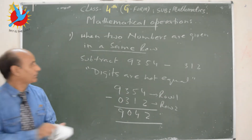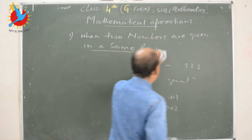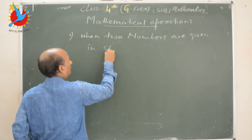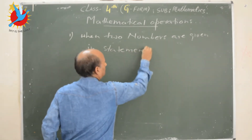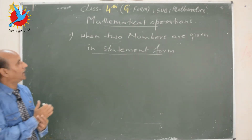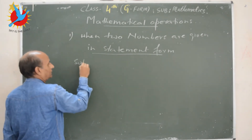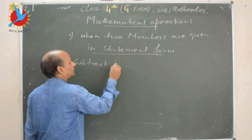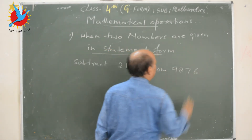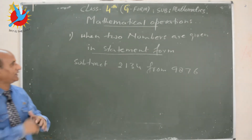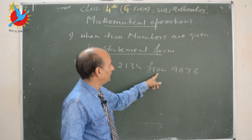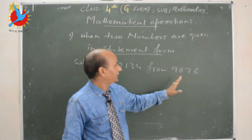The third format is when the number is given in statement form. The question will be asked like this: subtract 2 1 3 4 from 9 8 7 6. Remember: the number which is just after the word 'from' will always be bigger. So first take the number which is just after 'from' — write that number first, then write the second one just below it.